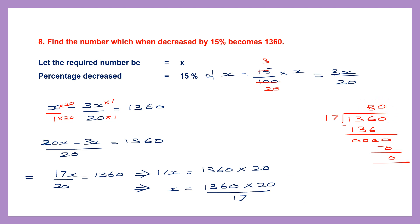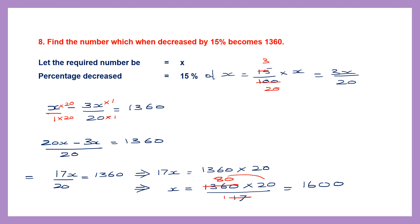17 × 80: cancel and write 80. Multiplying numerators: 80 × 20 = 1600. So x = 1600. We said let the required number be x, so we have found the number: x is equal to 1600.